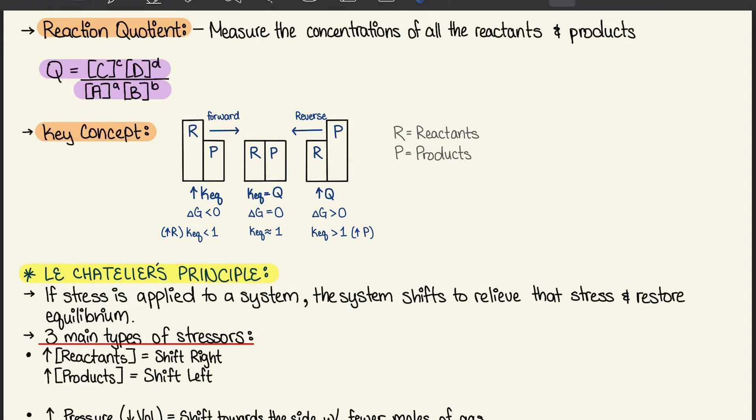If the products, however, have a larger concentration, we'll have a higher Q value, and the delta G will be positive, where it's greater than 0. And the KEQ will be greater than 1 as well. And this would favor a reverse reaction. So this is a good handy diagram to kind of memorize and see how the forward and reverse reaction works with the equilibrium constant and the quotient.